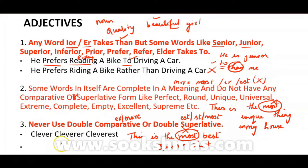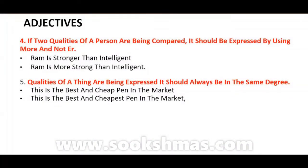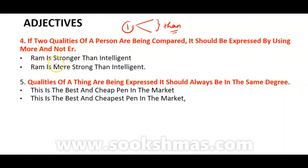Next: If two qualities of a person are being compared — meaning 'than' is being used between them — it should be expressed using 'more' and not '-er.' For example: 'Ram is stronger than intelligent.' Here Ram is one person with two qualities — strong and intelligent — being compared. So 'stronger' is wrong here; it should be 'more strong.'